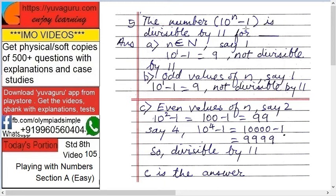The number 10 raised to n minus 1 is divisible by 11. First option is any natural number. Natural number means n belongs to N, starting from 1, any number.